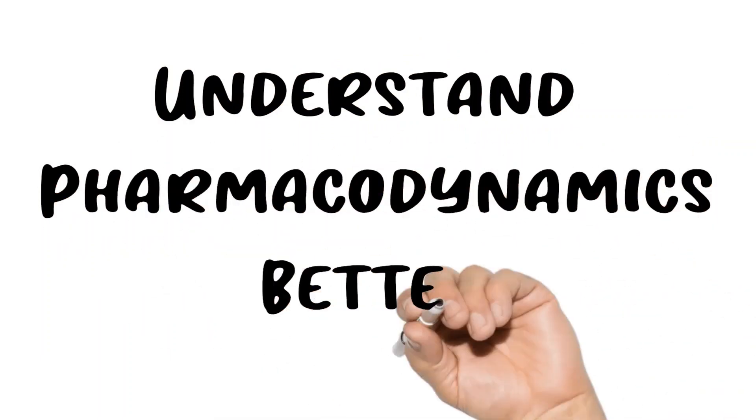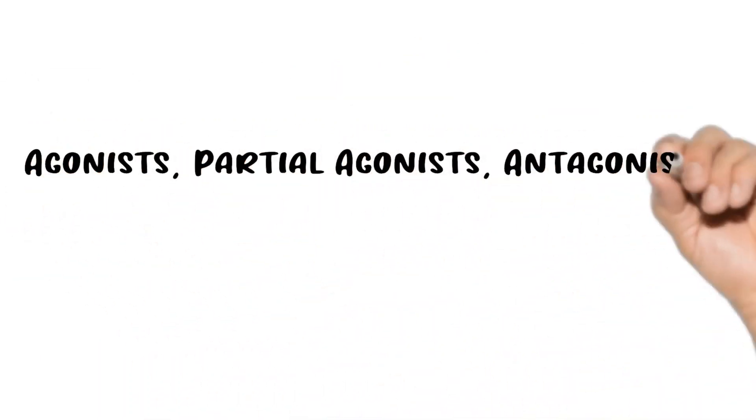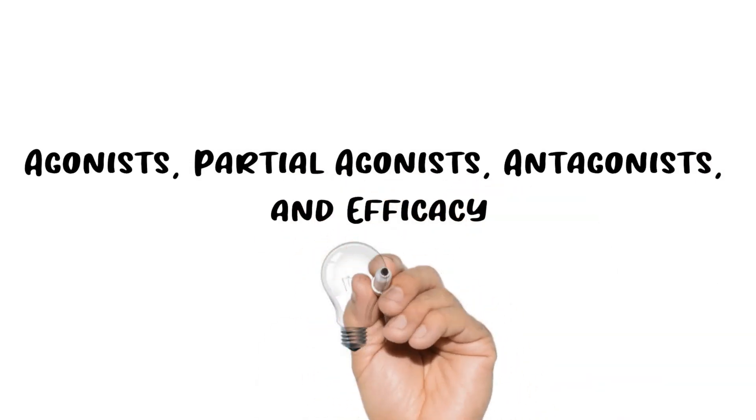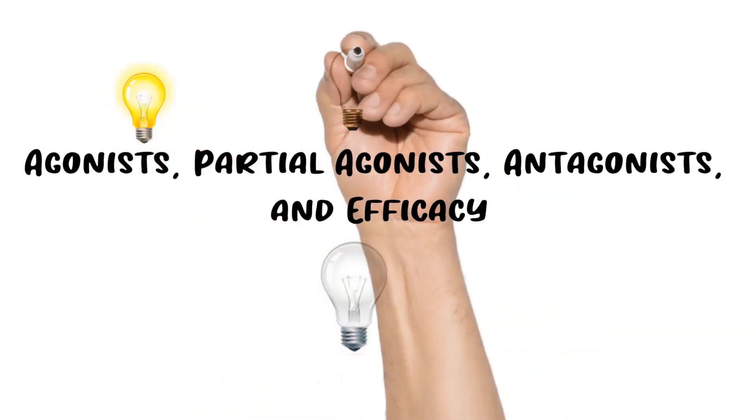This is the Understand Pharmacodynamics Better series. In this part, I'm going to cover agonists, partial agonists, and antagonists. A light bulb is a very intuitive way of visualizing the magnitude of an effect that occurs downstream from receptor binding.